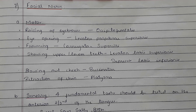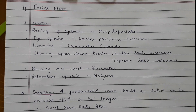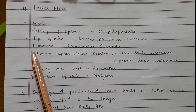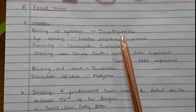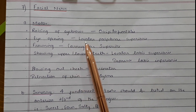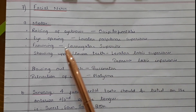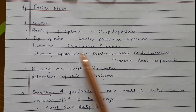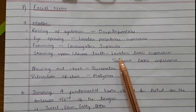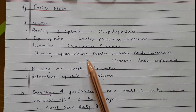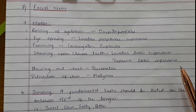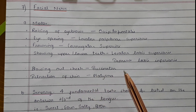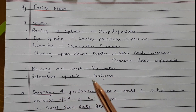The seventh cranial nerve, the facial nerve, is also a mixed nerve. Under the motor part, ask the patient to perform the following: raising of eyebrows by the occipitofrontalis; eye opening by levator palpebrae superioris; frowning by corrugator supercilii; showing the upper teeth by levator labii superioris; showing the lower teeth by depressor labii inferioris; blowing out of the cheek by buccinator; and retraction of the chin by platysma.